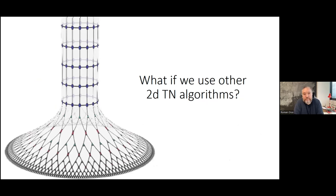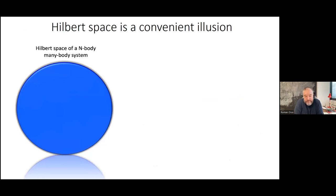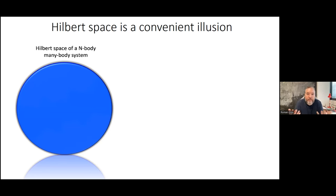So what happens if we use other two-dimensional tensor network algorithms? Let's start talking about tensor networks to put everybody on the same ground. Everything comes from noticing that the Hilbert space — as Frank Verstraete said one day — is a convenient illusion. It's the correct mathematical description of a quantum many-body system, but if we want to describe low energy states of matter, this is too much.